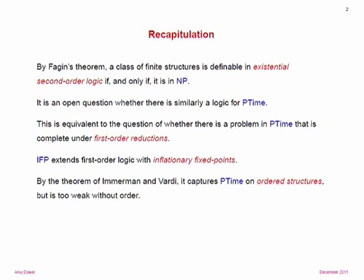IFP extends first-order logic with inflationary fixed points. It's powerful enough to express P-complete problems, yet still too weak to express such simple things as evenness, and it captures P time when we have an order on structures. Back in the 1980s, Immerman argued that first-order logic is weaker than polynomial time on two grounds: its inability to express inductive definitions — addressed by adding IFP — and its inability to do any kind of counting.